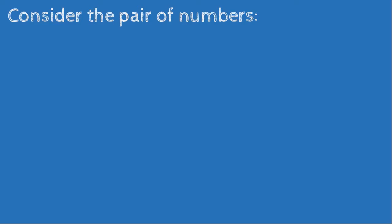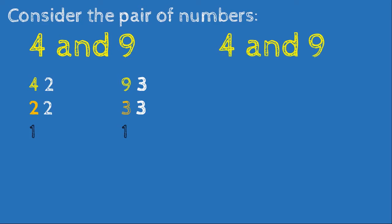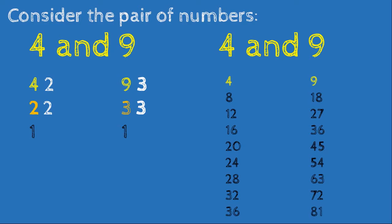Next, consider the pair of numbers 4 and 9. For 4: 4 divided by 2 is 2, divided by 2 is 1. For 9: 9 cannot be divided by 2, but 9 divided by 3 is 3, and 3 divided by 3 is 1. Multiples of 4: 4, 8, 12, 16, 20, 24, 28, 32, 36. Multiples of 9: 9, 18, 27, 36, 45, 54, 63, 72, 81.